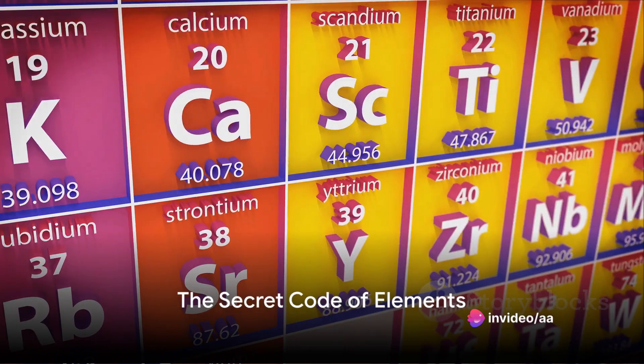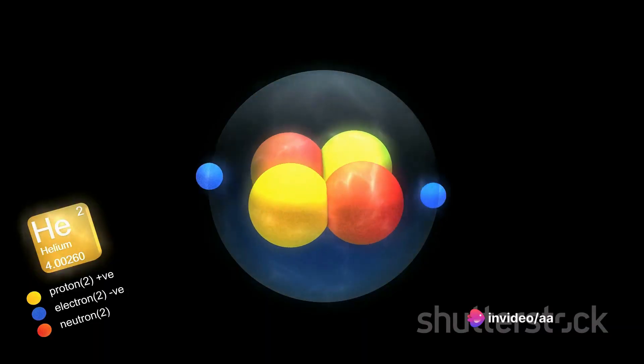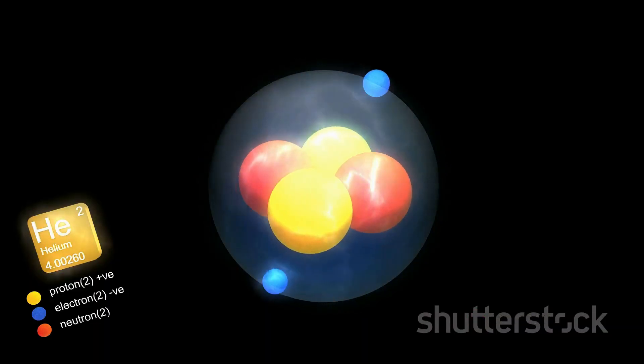Ever pondered about the secret code that defines the identity of every element in the universe? This code is hidden in two fundamental concepts: the atomic number and the atomic mass.